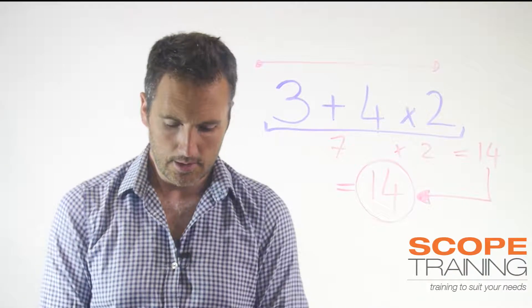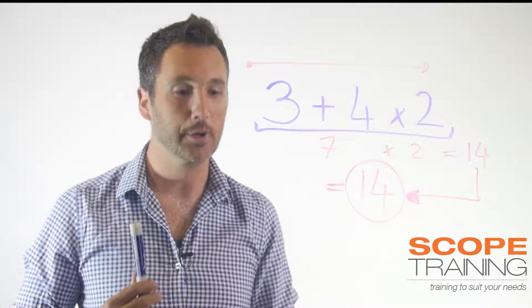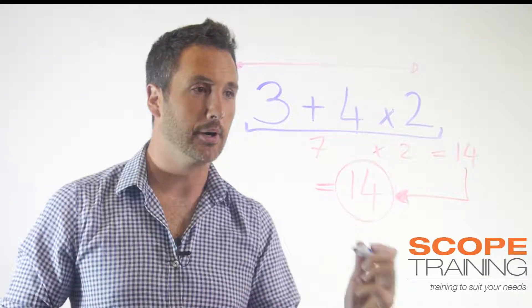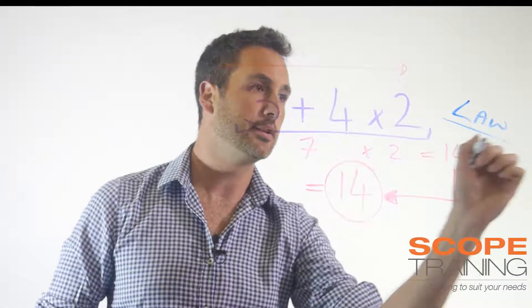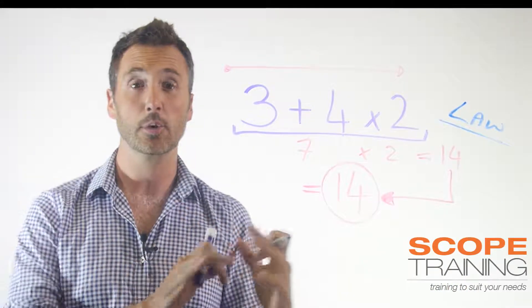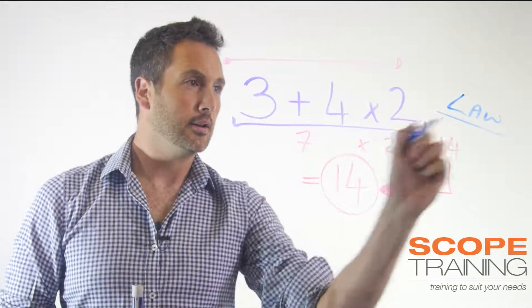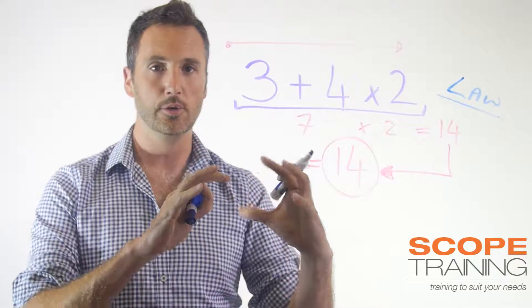And I'll explain why. There's this thing called the order of operations, and basically it's a principle of math—but it should be a law of math—saying you need to do it this way, because in math there's only one right answer. So basically what this thing says is you need to do things before other things.